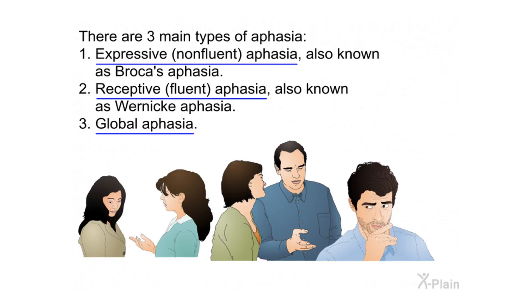There are three main types of aphasia: one, expressive non-fluent aphasia, also known as Broca's aphasia; two, receptive fluent aphasia, also known as Wernicke's aphasia; three, global aphasia.